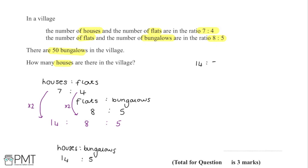We have 14:5 and we want 50 bungalows, so we need to multiply this ratio by a factor of 10. Multiplying both sides gives us 140:50. So when there are 50 bungalows in the village, there are going to be 140 houses.